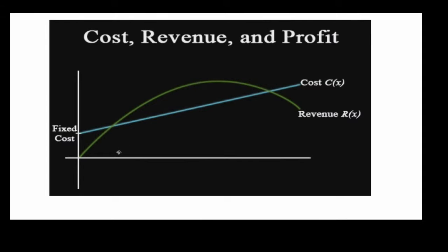Let's look at a graphical way of understanding this. Here's a graph with a cost function and a revenue function. The X-axis is the number of items and the vertical axis is money. The cost function shows a fixed startup cost at X equals zero — for buying machinery etc. — and then increases linearly, meaning each item costs a fixed amount to produce, say 30 cents.